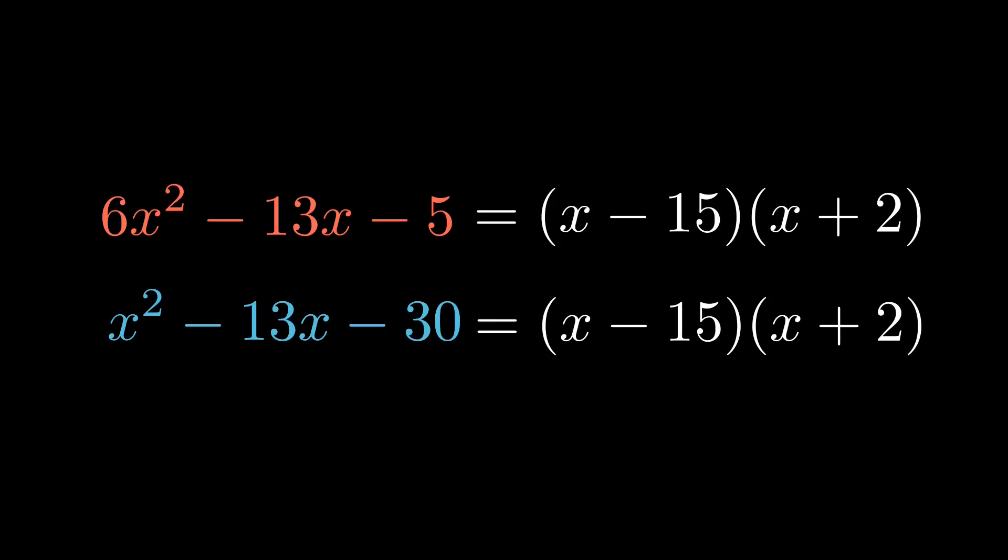Here's the most important step. We'll take each factor and divide it by the A term in our original equation. Next, we'll reduce each of those fractions to their lowest terms, and finally move the denominator of each in front of its corresponding x term. Lo and behold, this is the correct answer. If you multiply these factors out, you get back to our original equation, 6x squared minus 13x minus 5.